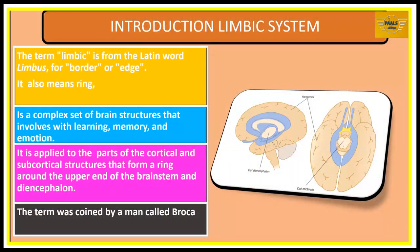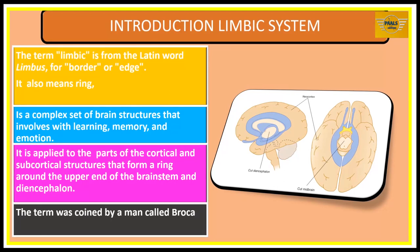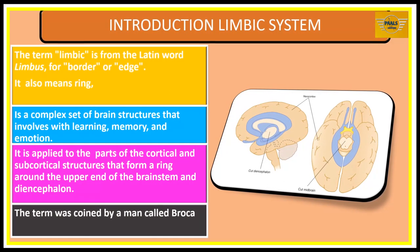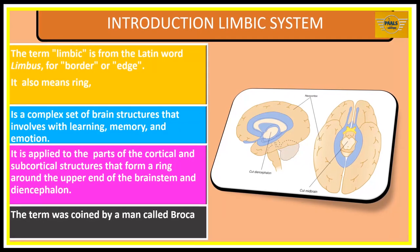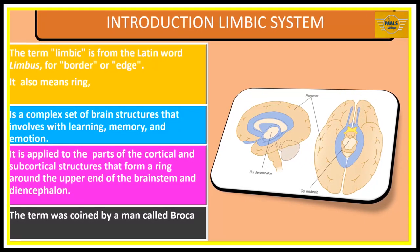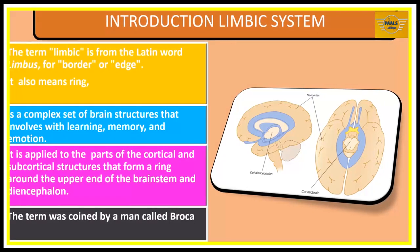The term 'limbic' is a Latin word meaning limbus, for border or edge. It also means ring. In our context today, it refers to those complex set of brain structures that are involved with learning, memory, and emotion. They are cortical structures coming from the cerebrum, and also sub-cortical structures from below the cerebrum, forming a ring around the upper end of the brain stem and the diencephalon.